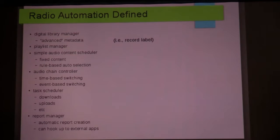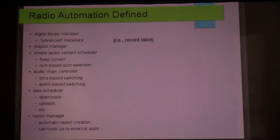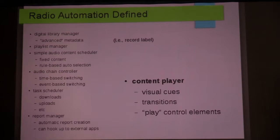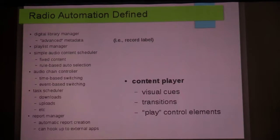You can define your reports and have them generated so you can just go and read them whenever you're ready. Those are some of the basic capabilities of radio automation. And obviously, last but not least, is the content player — something that has visual cues for the person on the air, something that can handle good transitions between events, and that has the ability to control your automation system from the player itself.